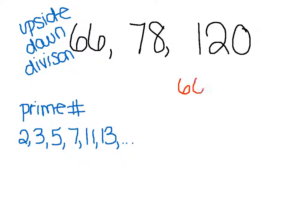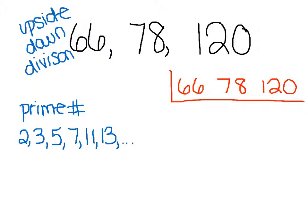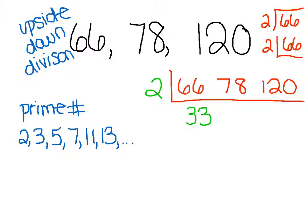I'm going to list out 66, 78, and 120, and start with the smallest prime number, which is 2. Because they're all even, 2 goes into each of them. Using upside-down division, I put the 2 on the outside: 66 divided by 2 is 33, 78 divided by 2 is 39, and 120 divided by 2 is 60.